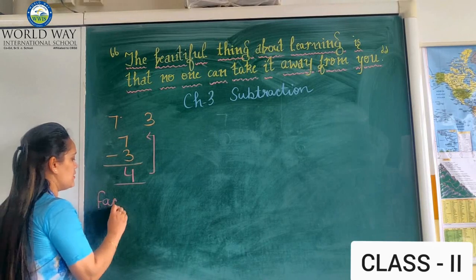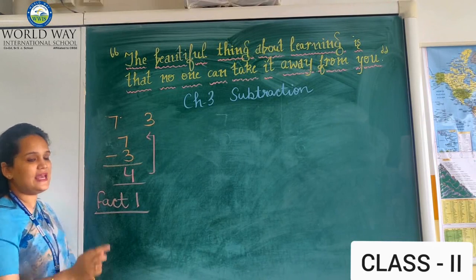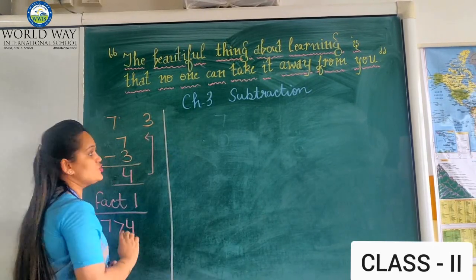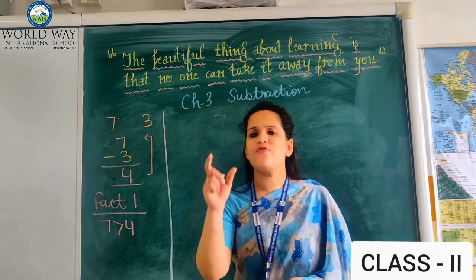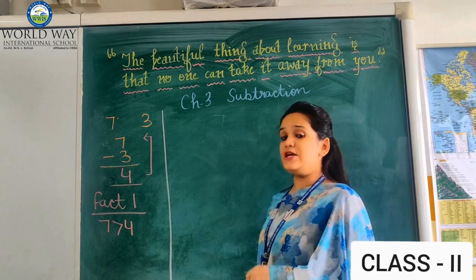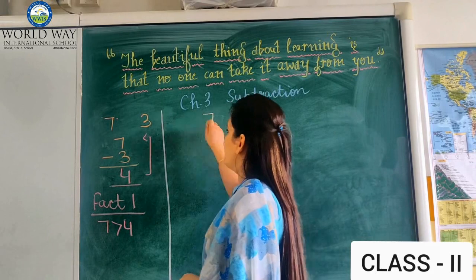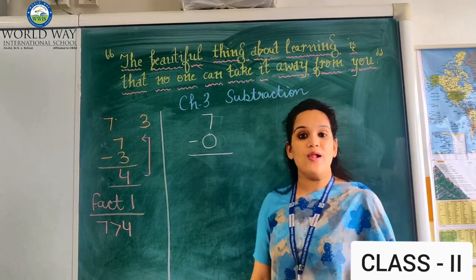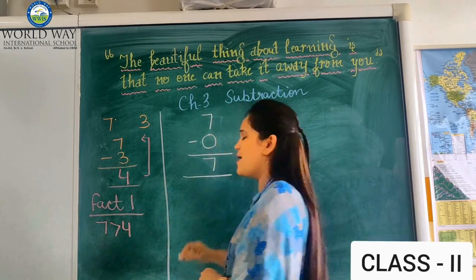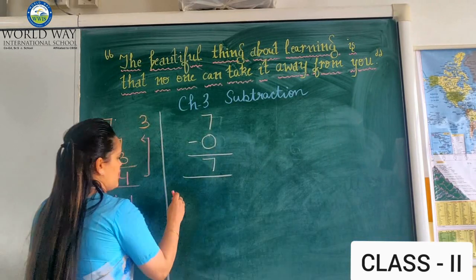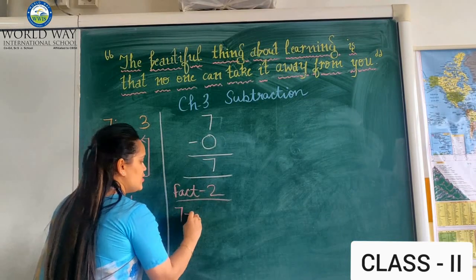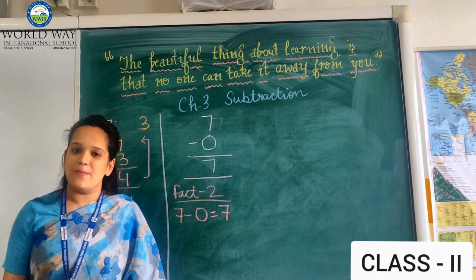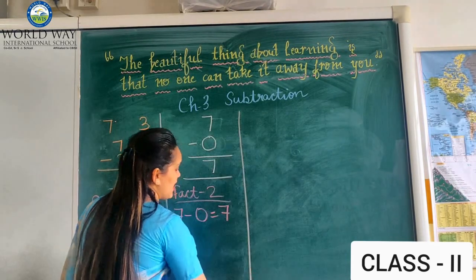This is our fact number 1: the difference is always lesser than the bigger number. Now fact number 2: if you will remove 0 from any number — suppose I have 7 and I remove 0 from it — the answer will be the number itself. So this is our fact number 2: if you remove 0 from any number, you get the number itself as the difference.